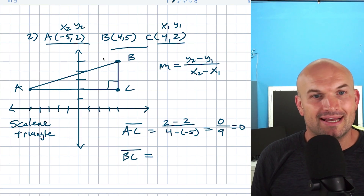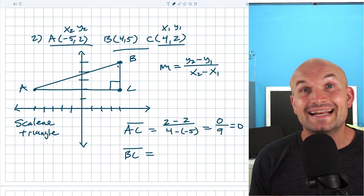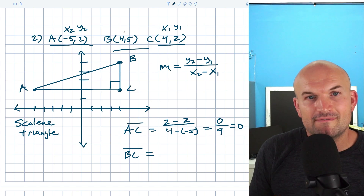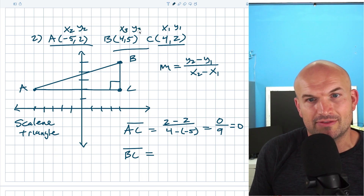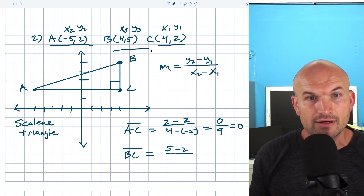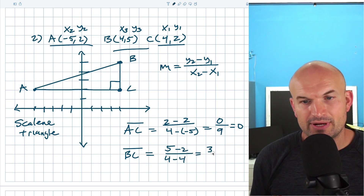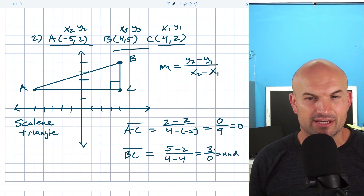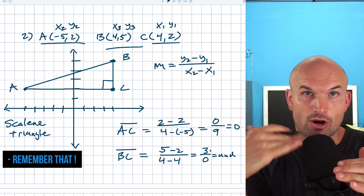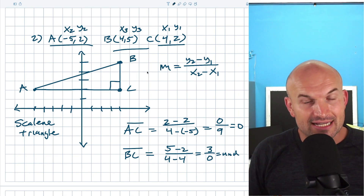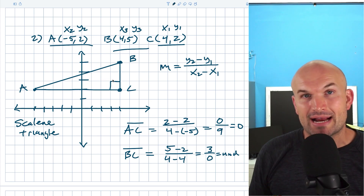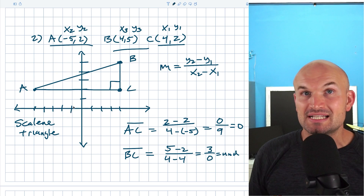Now let's go and check the slope for BC. I'm going to label B as X3 and Y3. So instead of Y2 and X2, we'll use Y3 and X3. What I have here is (five minus two) all over (four minus four), which gives me three over zero — that is undefined. When you have a zero slope, that's a horizontal line. When you have an undefined slope, that is a vertical line. So yes, we are dealing with two lines that are perpendicular. Therefore, since we have perpendicular legs of the triangle, they are creating a 90-degree angle — and we can classify that as a right triangle.